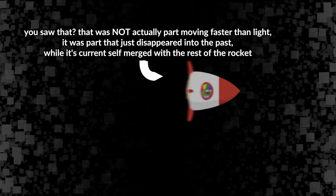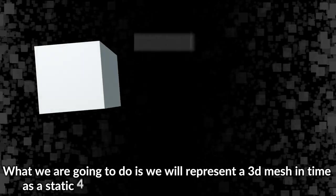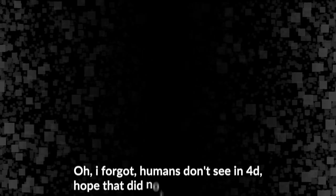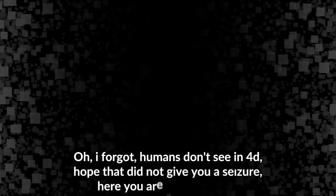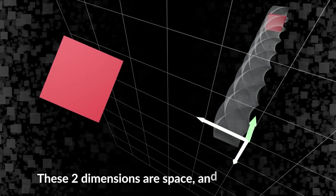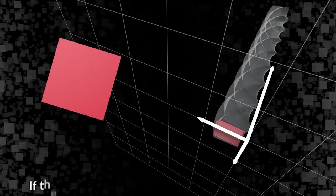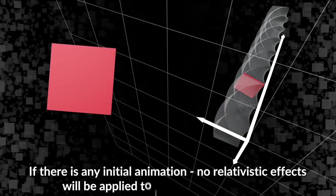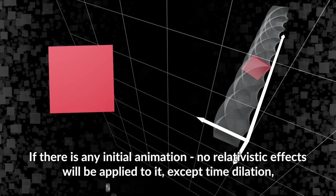What we are going to do is we will represent a 3D mesh in time as a static 4D mesh - something you already familiar with. Oh, I forgot humans don't see in 4D. Hope that did not give you a seizure. Here you are, a 3D analog: these two dimensions are space and this one is time. If there is any initial animation, no relativistic effects will be applied to it except time dilation, so don't get wild with it.